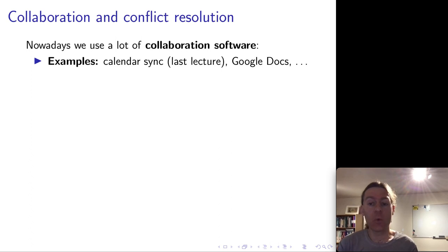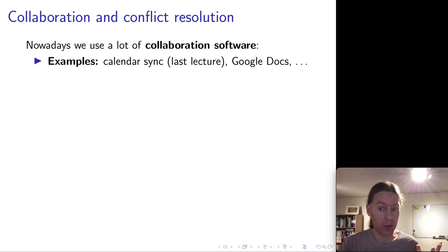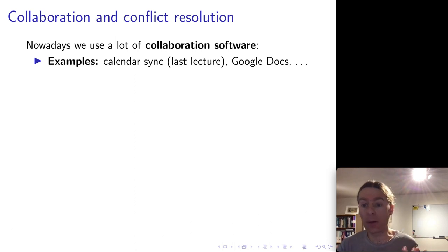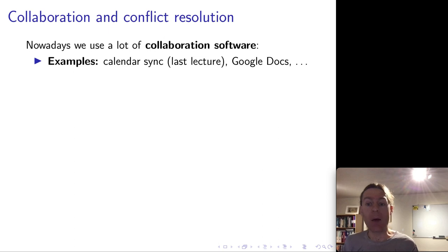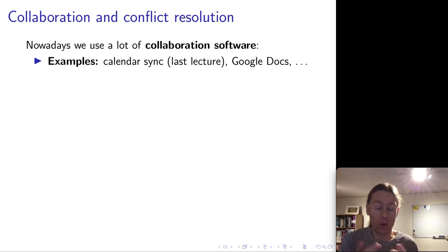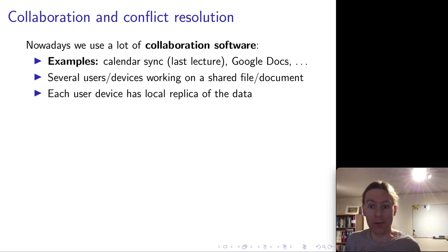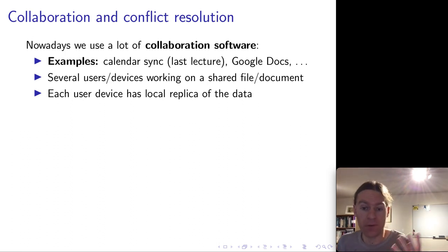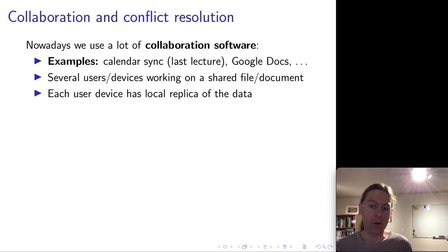I'd like to start with collaboration software. This is a fairly broad category, but you've probably used things like this before. What I have in mind are things like Google Docs, where you can have several people editing a document at the same time, or the calendar sync example that we saw in the last lecture, where I can update some events on one device and have those synchronize over to another device, and many other applications that have this kind of similar collaboration built in nowadays, because it's just so useful to be able to work on something with your colleagues without having to email files back and forth.